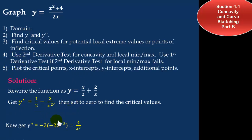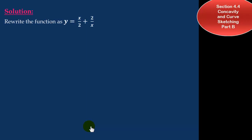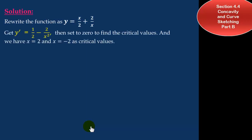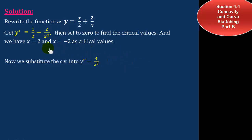Getting the second derivative: y double prime equals 4 over x cubed. Setting that equal to 0, we see it does not exist at x equals 0. We can still test for concavity to the left and right of 0. The critical values x equals 2 and x equals negative 2 were confirmed by setting y prime equal to 0 and solving for x.